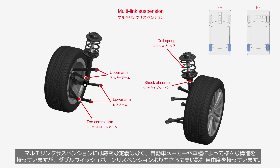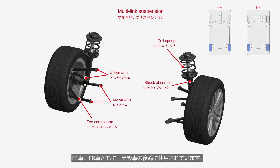There is no strict definition for multi-link suspension, and it comes in various structures depending on the car manufacturers and models. However, it offers even greater design flexibility than double wishbone suspension. Multi-link suspensions are particularly used in the rear suspension of both FF and FR luxury cars.